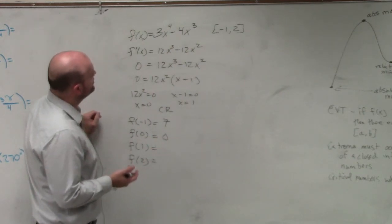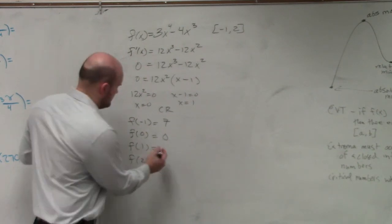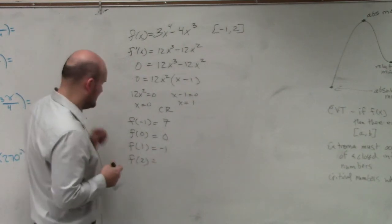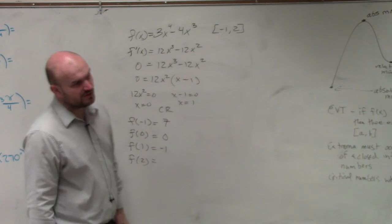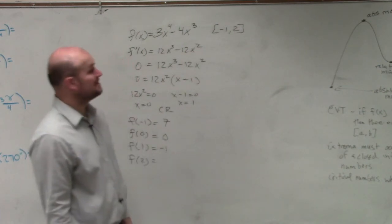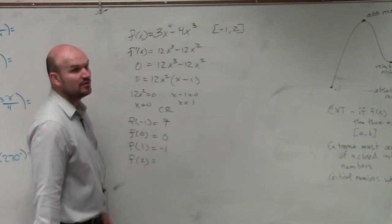f of 1 is going to give you negative 1. And if I did f of 2, 2 to the fourth power is going to be 16. 3 times 16 is going to be 48.